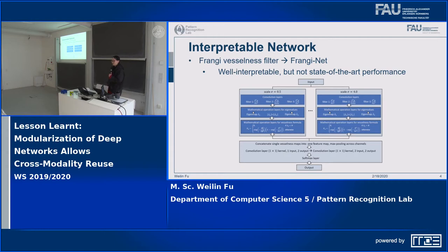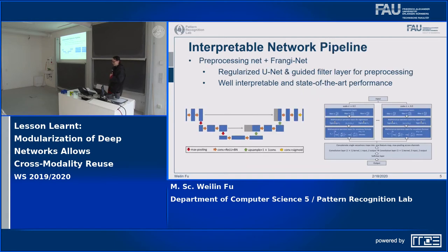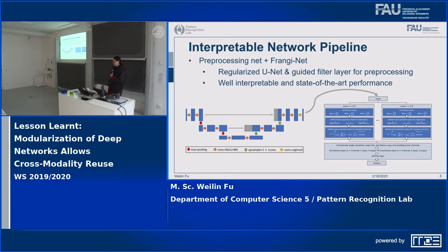So the next step was to build an interpretable network pipeline, which is my work in the last MICCAI. What we have is a preprocessing network — in this case a U-Net, or we could also use a guided filter layer. We add a regularizer to the U-Net to guarantee that the output from the preprocessing step resembles its input. The output of the preprocessing unit is then fed into the Franginet for vessel segmentation. With such a pipeline, we have an interpretable network, the performance is boosted, and it basically reaches state-of-the-art.